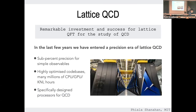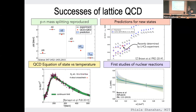Over the last five years we've entered a true precision era for lattice QCD. This has come at the cost of 30 years of optimization of relevant QCD codes. We are now in the era of sub-percent precision for many observables — describing the structure of the proton, meson spectroscopy, structure, and so on. We have highly optimized code bases using many millions of CPU/GPU hours, optimized through intensive collaborations with NVIDIA and Intel. Specific processes were designed for QCD; the forerunners of the BlueGene Q supercomputers came out of this effort.